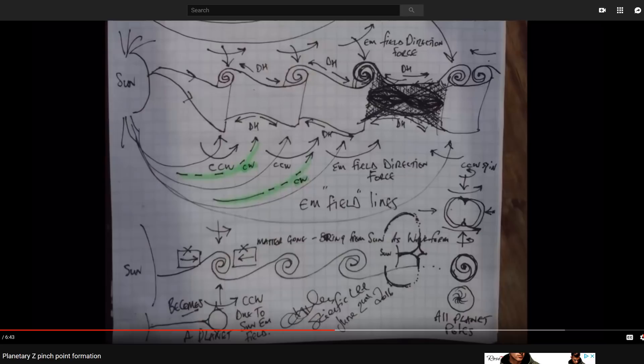I want you to look at the arrows and the direction of travel. It says DH above and below the wave scroll of energy. Now those arrows on either side of the scroll roll back into the scroll. This is how I've said the electromagnetic field works on many videos.